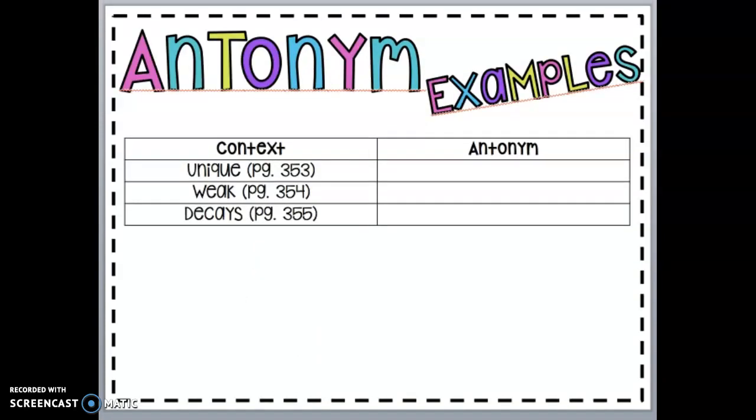Now let's practice some antonyms together. We're gonna look at the word unique on page 353 and we're gonna look for some context clues. Remember those context clues are the words that surround the word unique so we can figure out what unique would mean. Now you all probably already know that unique means it's special. Now we have to find the word that would be the opposite of unique. So let's take a look at page 353 and see if we can find the antonym.